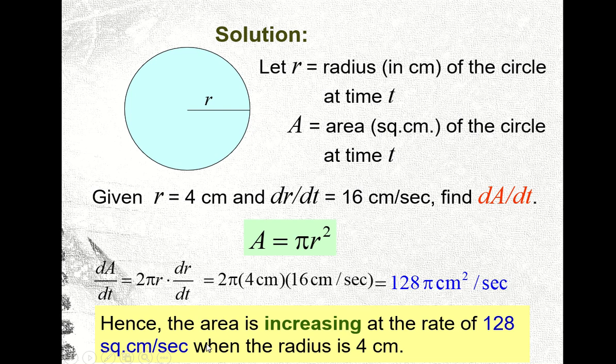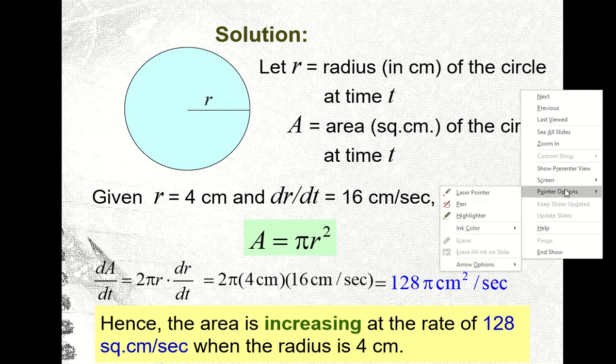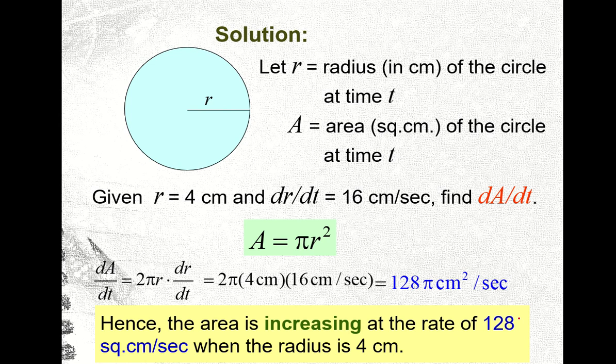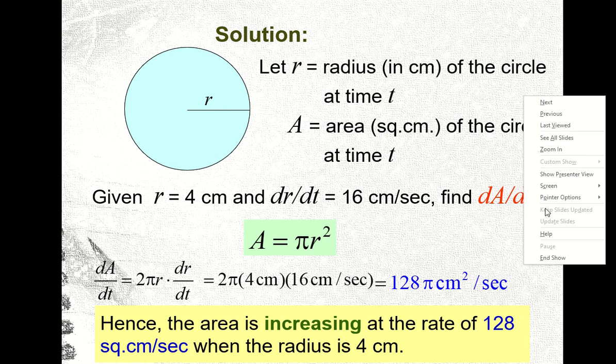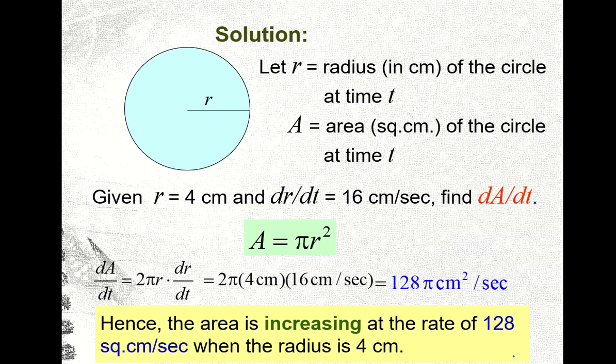Okay, so this is the conclusion class. Hence, the area is increasing at the rate of 128... Sorry class, it's lacking. There should be a pi here. 128 pi. So the pi. So the pi was missing. So 128 times pi. So I'll change this to 128. Okay. Okay. Square cm per second. So hence, the area is increasing at the rate of 128 pi square cm per second when the radius is 4 cm.